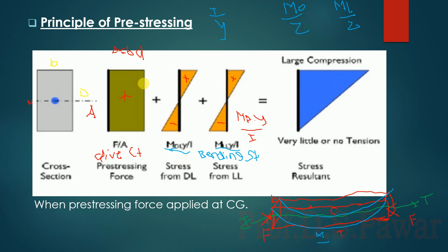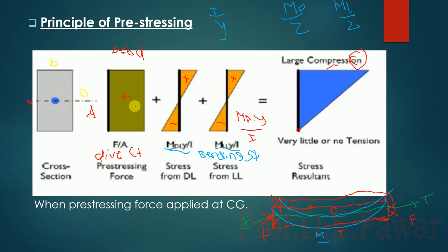Due to the superimposed load, both bottom values are in tension. We have introduced the compression force in such a way that it counteracts those tensile stresses, which are internal stresses developed in a planned manner. These negative tension values cancel with the plus compression, making the value zero at the bottom, and the top has two compressions. So the total net stress — the section is fully in compression.